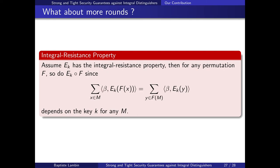For integral resistance specifically, it is much easier. If we show that block cipher E_k is resistant against integral attacks, then for any permutation f, adding this permutation at the input also results in something immune to integral attacks. If we add a permutation at the input, the sum over f(M) of a linear combination of output bits is non-zero, which essentially means it depends on the key. So for integral resistance: if we show that r rounds of a cipher are immune to integral attacks, then any higher number of rounds is also immune.